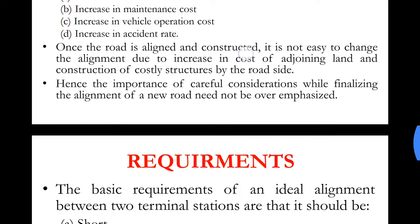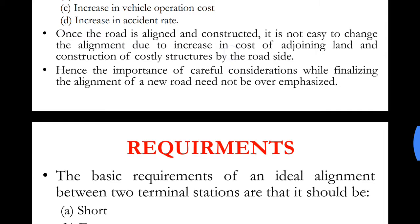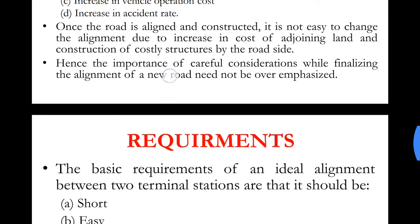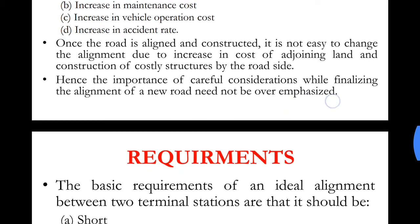Once the alignment is set and the road is constructed, if we later need to change the radius of a horizontal curve, we would need to demolish and reconstruct the road. Increasing the radius of the horizontal curve requires a greater land area, which would need to be acquired, leading to increased construction costs. Hence the importance of careful consideration while finalizing the alignment of a new road cannot be over-emphasized.